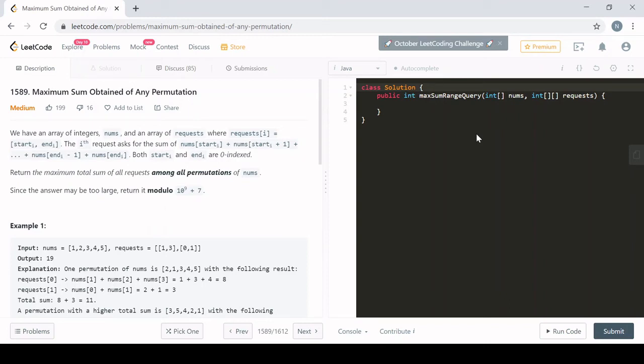Welcome to today's video. We'll be looking at LeetCode problem number 1589, the maximum sum obtained of any permutation.